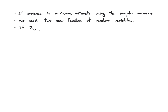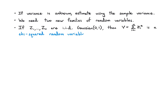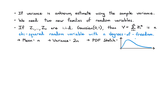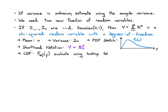The first new distribution: if we have Z1 through Zn which are IID Gaussian(0,1), and we square them and add them up, the resulting random variable is called chi-squared with n degrees of freedom. Its mean is n, its variance is 2n, and its PDF starts at 0, rises to a hill, then decreases. We write it as Y ~ chi-squared sub n. The CDF must be evaluated using a lookup table or software.